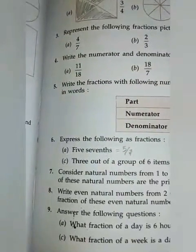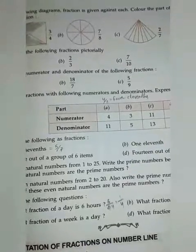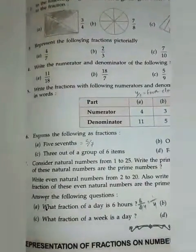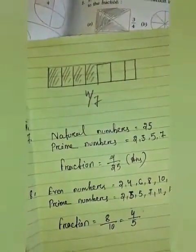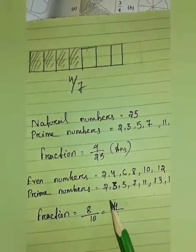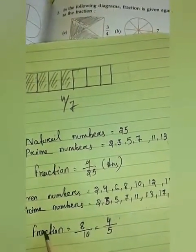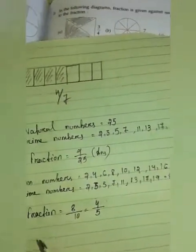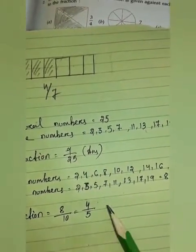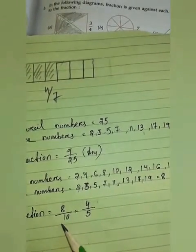Then comes question 8: Write even natural numbers from 2 to 20. Also write the prime numbers between 2 and 20. What fraction of these even natural numbers are the prime numbers? You have to write first even numbers, then prime numbers. Total even numbers is 10 and total prime numbers is 8. So 8/10 is the fraction. If you reduce, then you get 4/5 — dividing both by 2: 8÷2=4 and 10÷2=5.